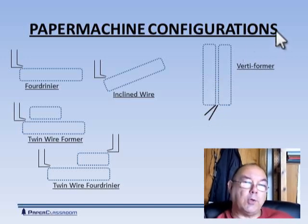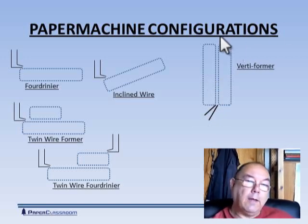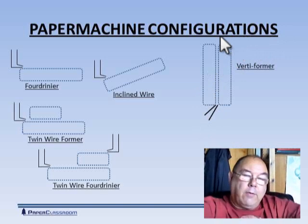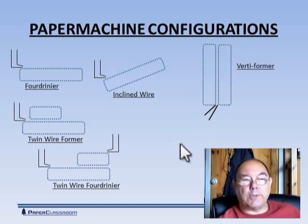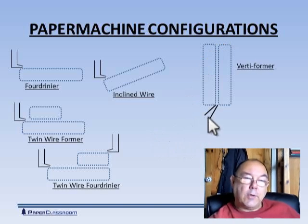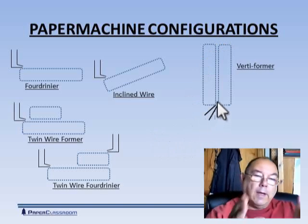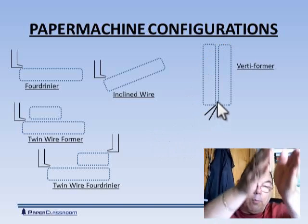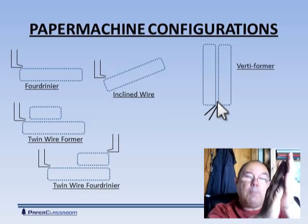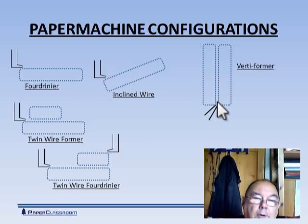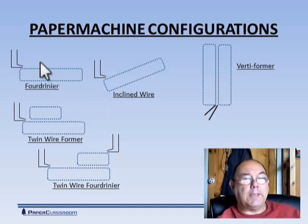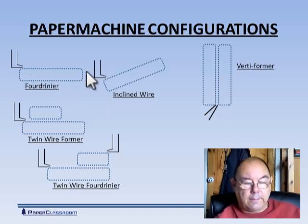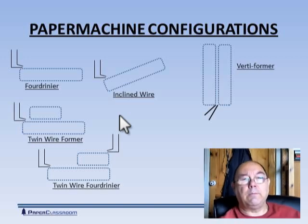And there's also you know you see often in the newsprint industry what we call vertiformers. People did experiments at one time with putting the head box here and having the two wires coming down but that was very quickly rejected. Still successful today is the idea of squirting the stock up and having two wires coming up and the stock gets caught in between those two wires and around. So as you can see this is not the only way of organizing paper manufacture.